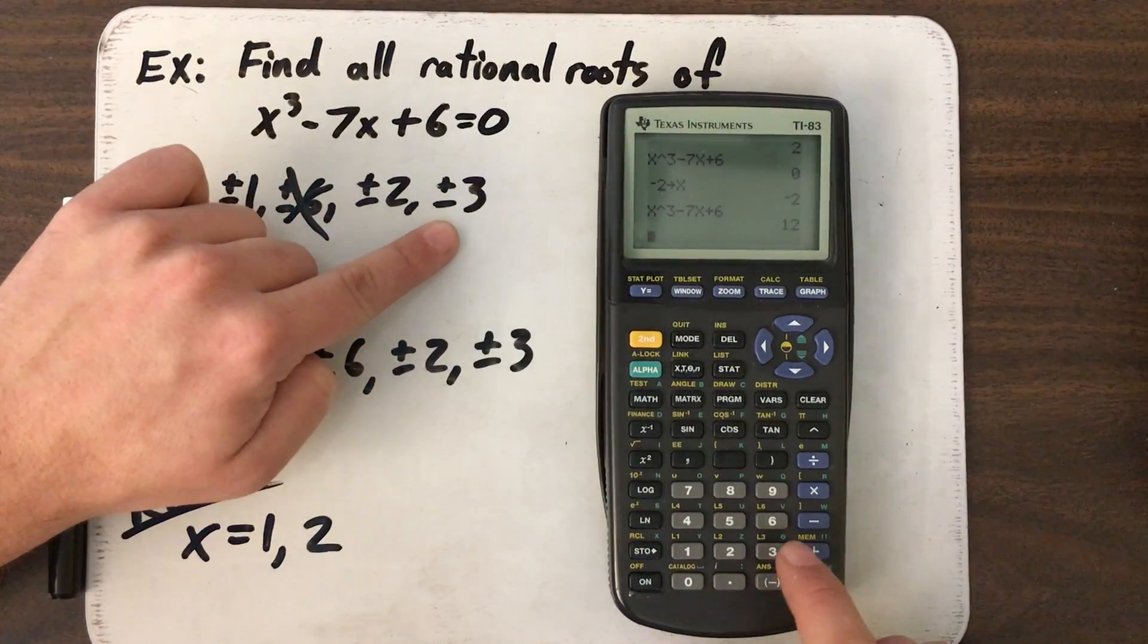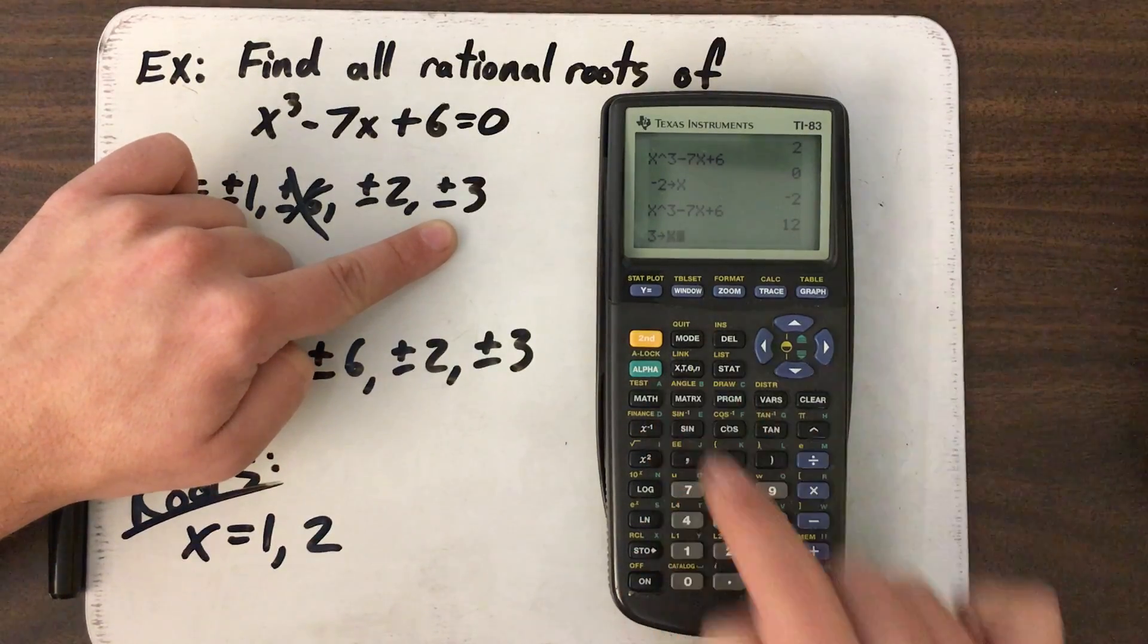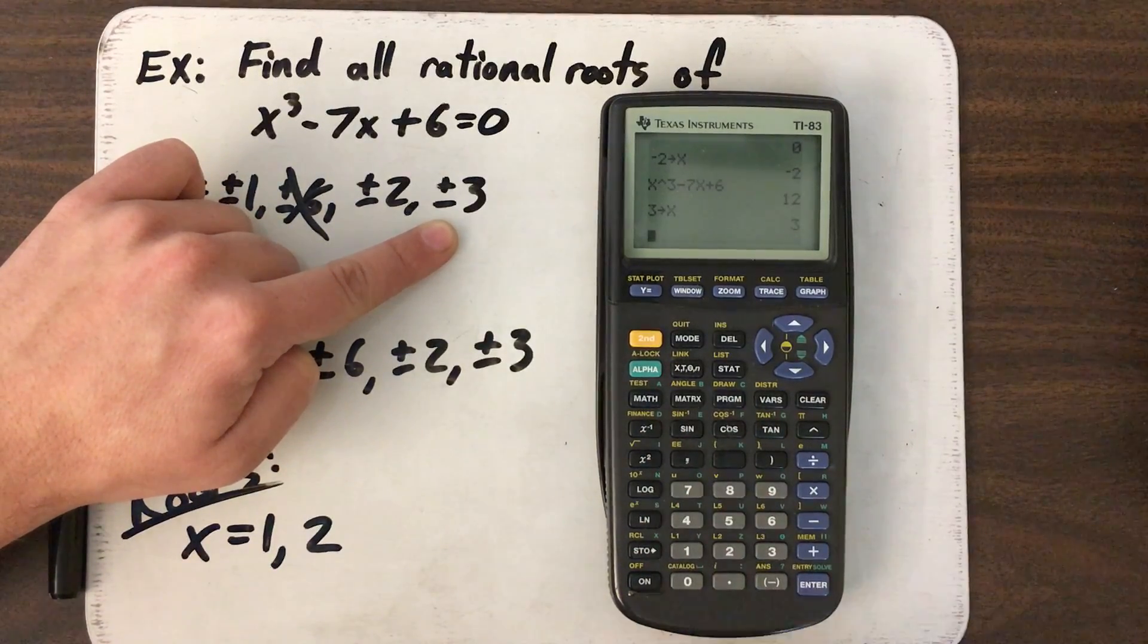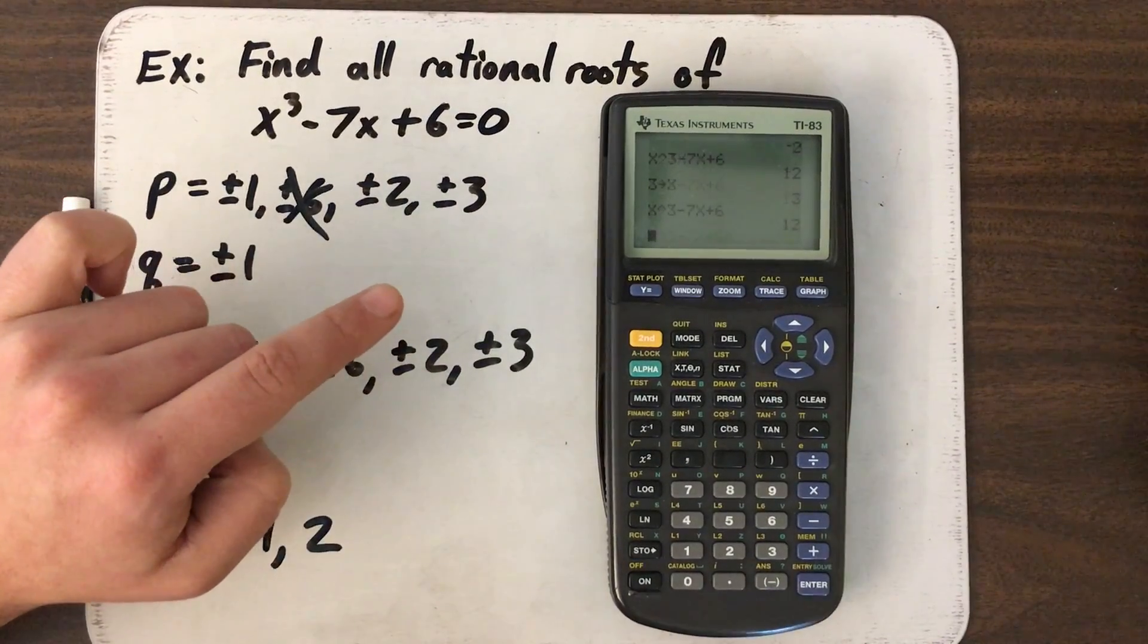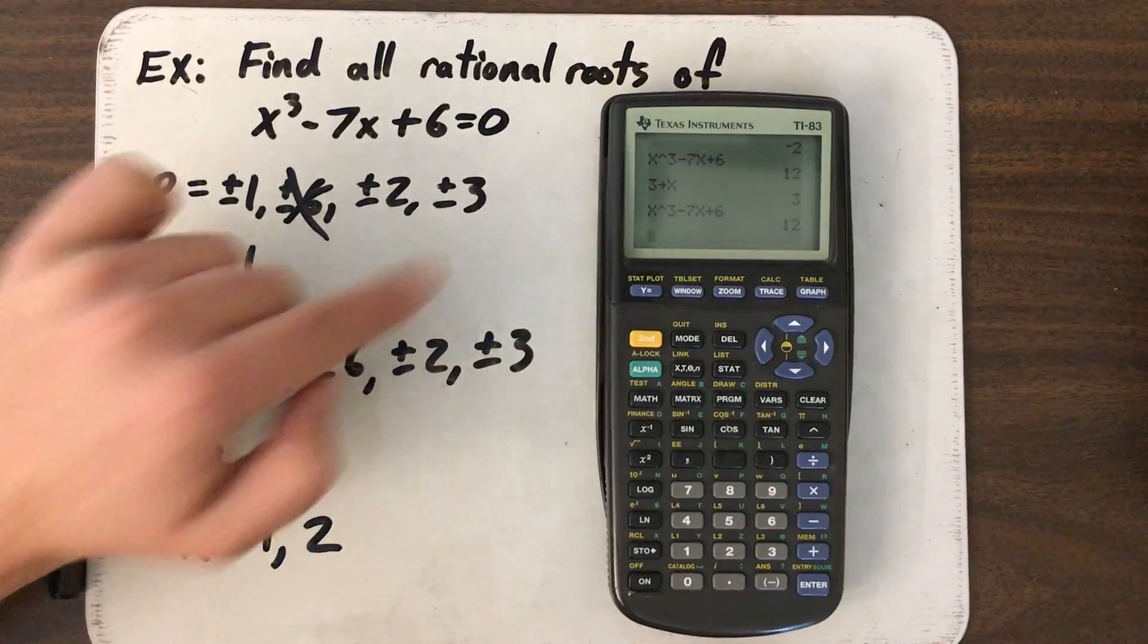What about 3? 3, store for X. Press enter. Second, enter. Second, enter. Try it out. I get 12. 3 doesn't work.